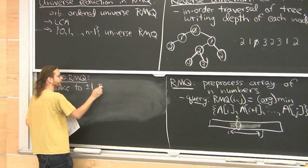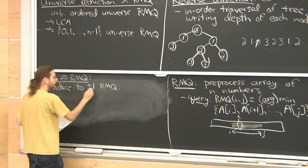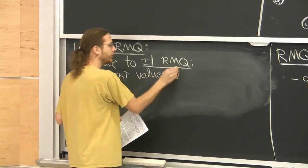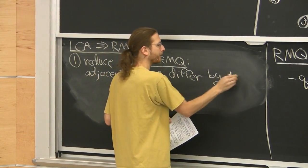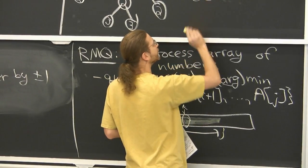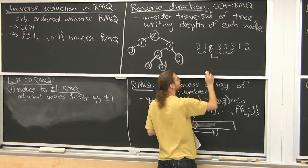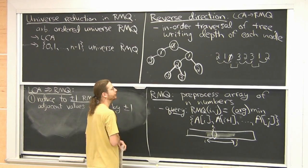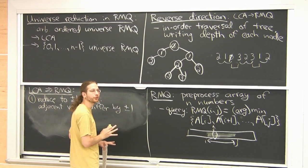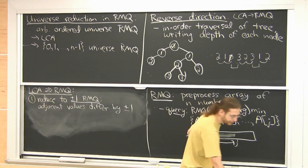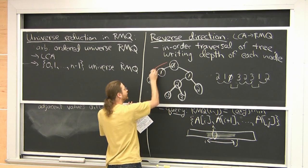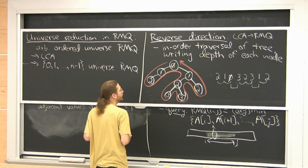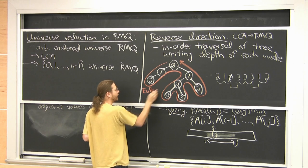Plus-or-minus-1 RMQ means you get an array where all adjacent values differ by plus or minus 1. If you stare at the depth-sequence idea enough, you realize a little trick: instead of in-order traversal, use an Euler tour — visiting every edge twice. This gives plus-or-minus-1 differences and is usually called an Euler tour. You visit every edge twice, so it's amortized constant visits per node.